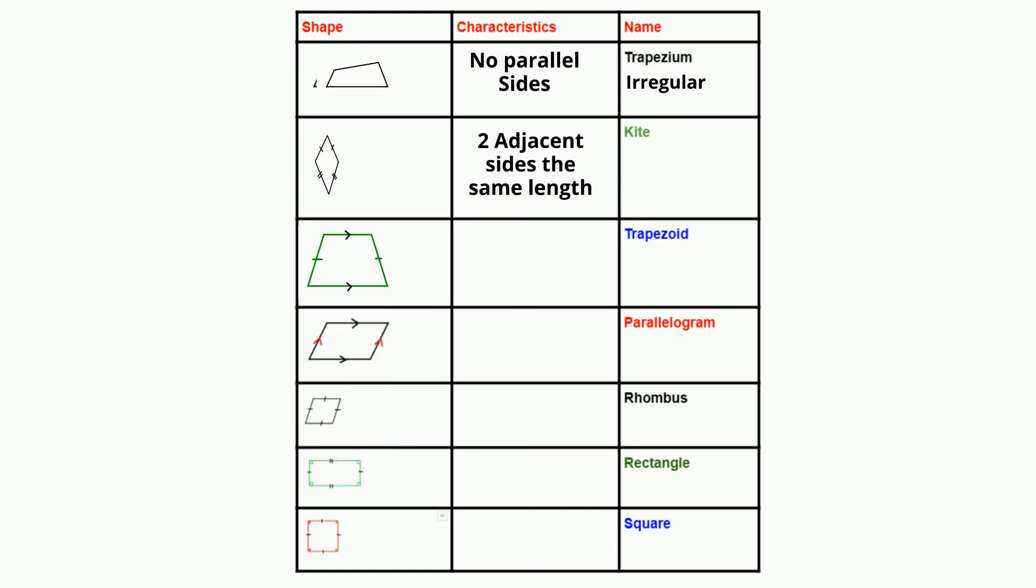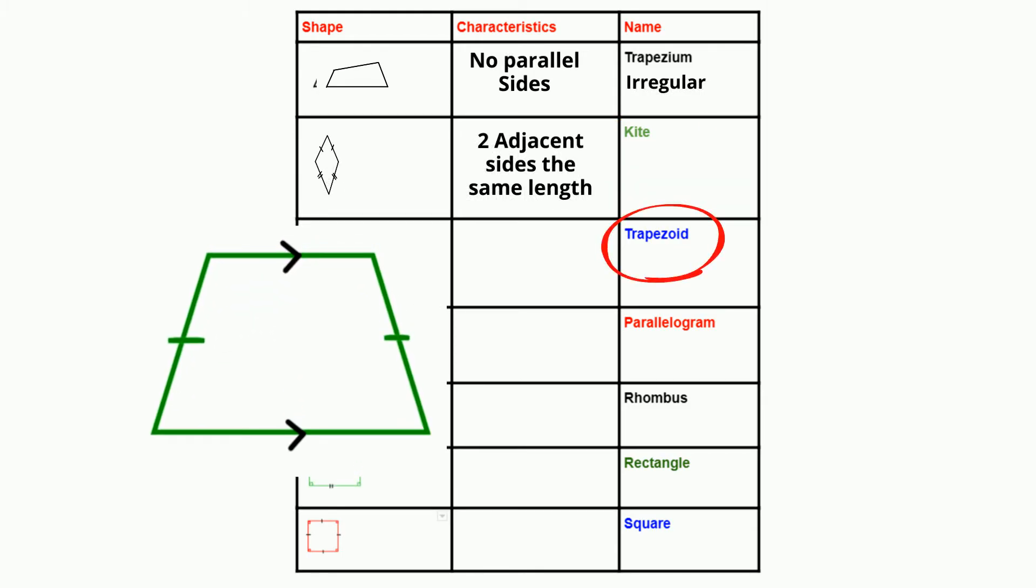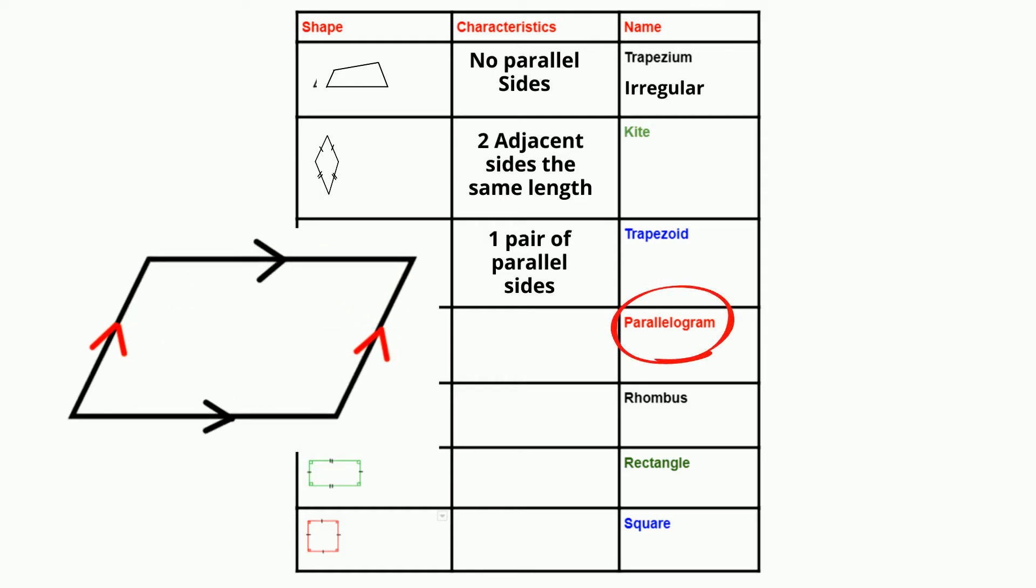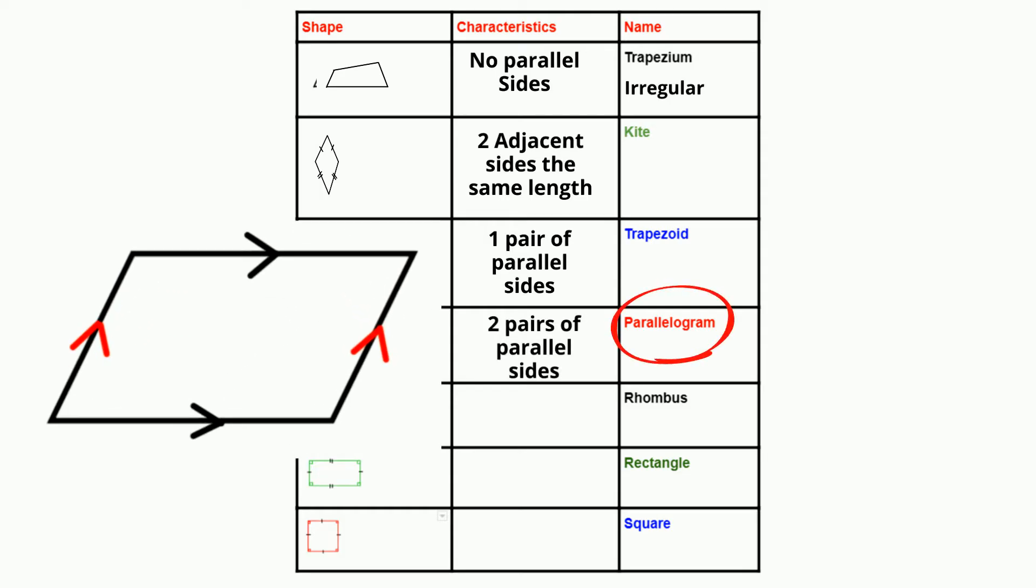As you move down, a little bit more specific is a trapezoid with exactly one pair of parallel sides. Next, a parallelogram has two pairs of parallel sides.